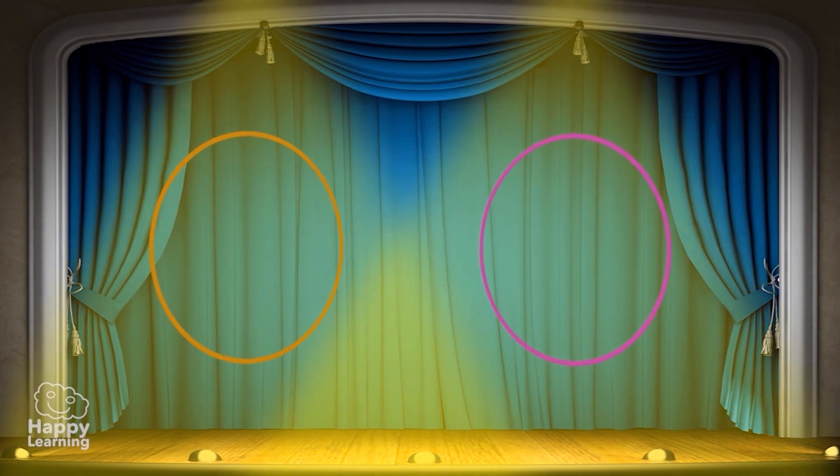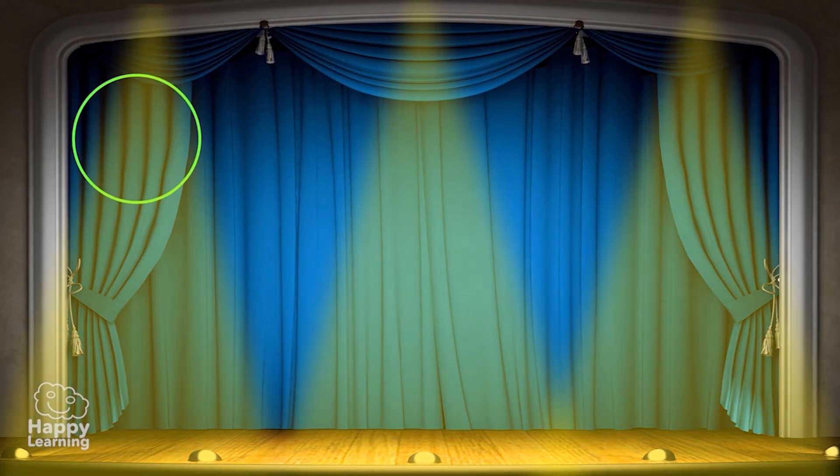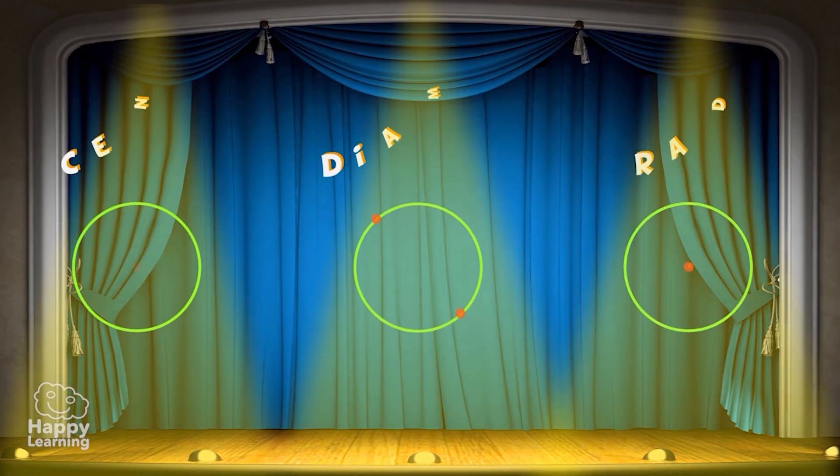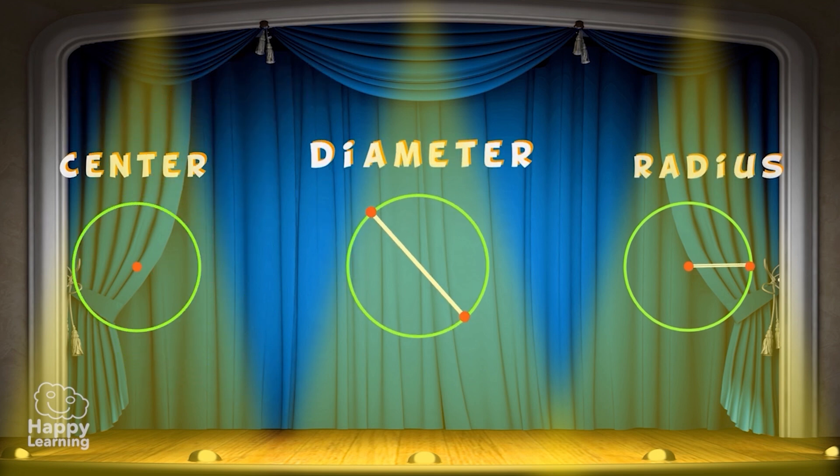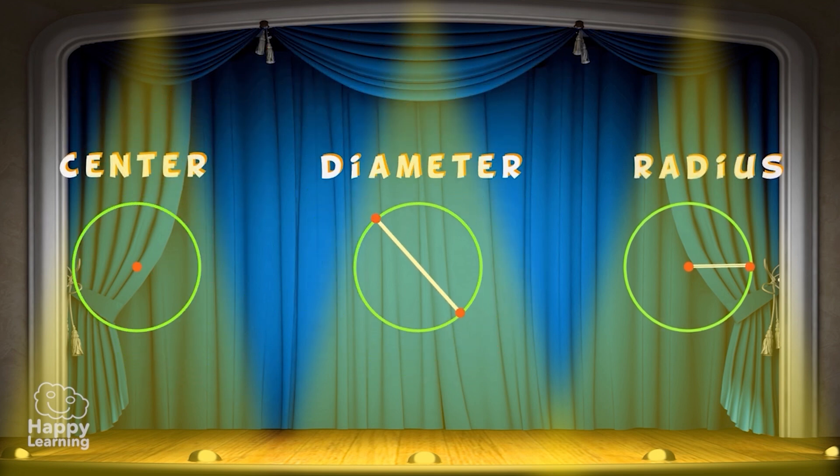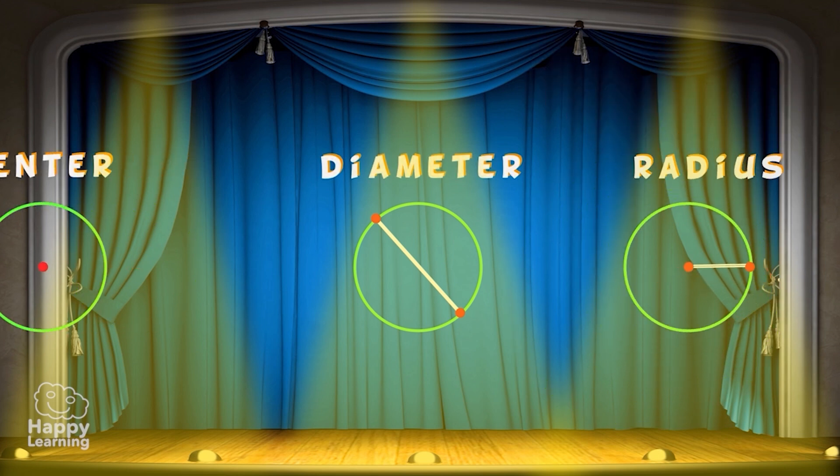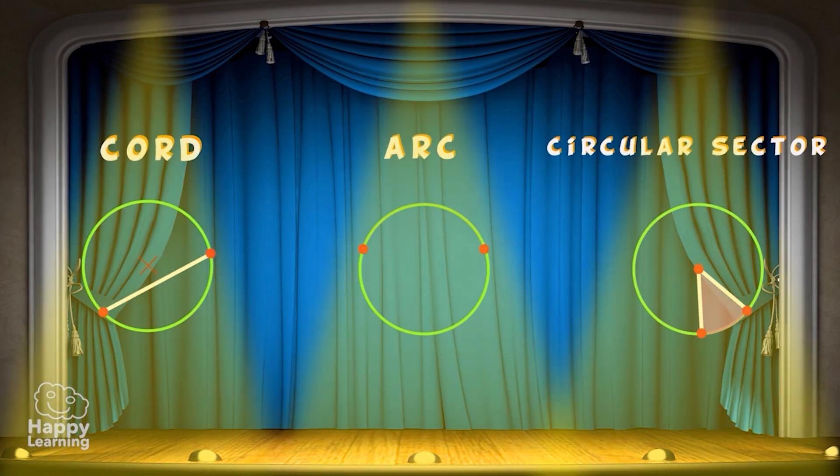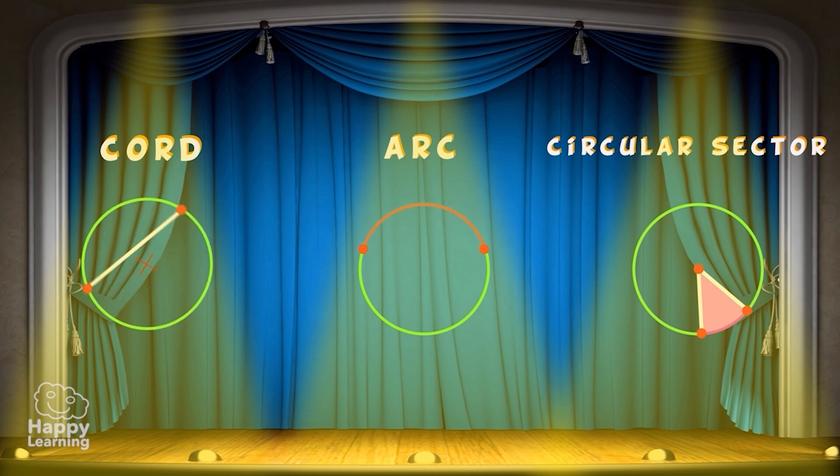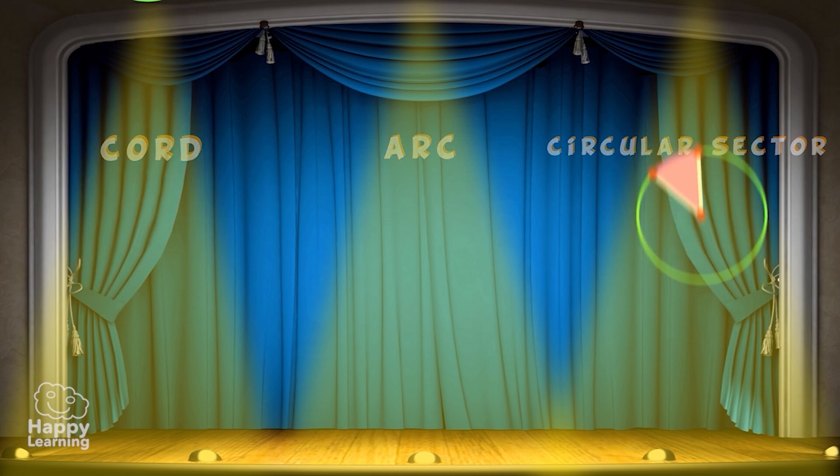Well, now we know all the elements in a circumference, but let's go over them one more time so we don't forget. Let's start with the first three most important ones: the center, diameter, and radius. And now the next three: cord, arc, and circular sector, which is the one that looks like cheese.